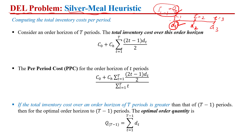Our objective is to minimize the total cost, which includes ordering cost as well as holding cost — in the supply chain or inventory context. In the context of production planning or lot sizing in a production environment, the ordering cost is actually the setup cost, and we also have the inventory holding cost.